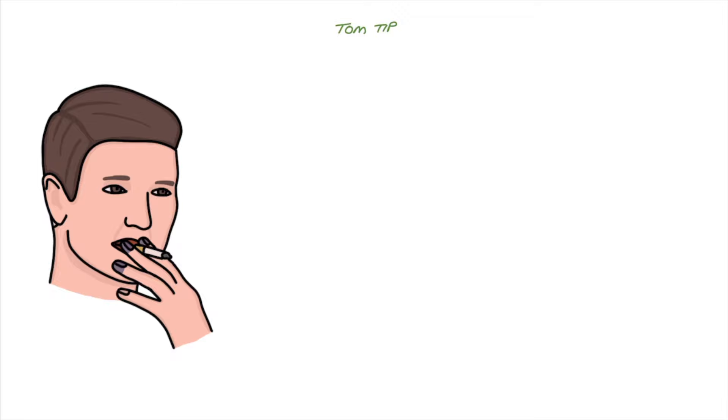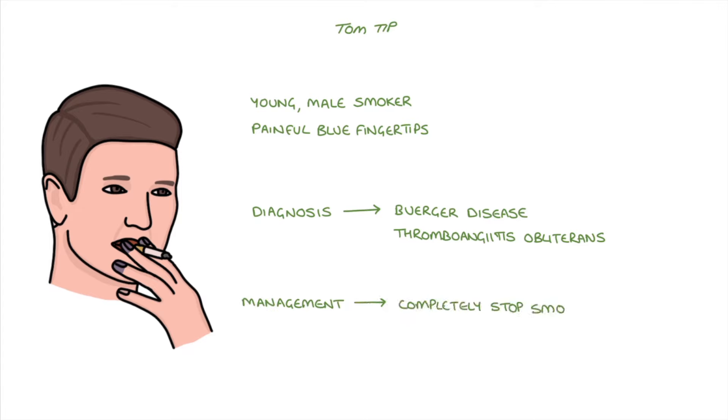A final exam tip for you: the key presentation to remember for your exams is a young male smoker with painful blue fingertips. The exam question may ask for the diagnosis, which you can put as Buerger disease or thromboangitis obliterans, or it may ask for the most important aspect of management, which is to completely stop smoking.